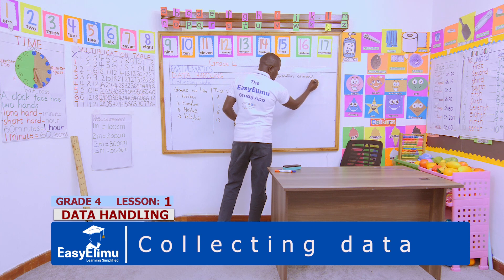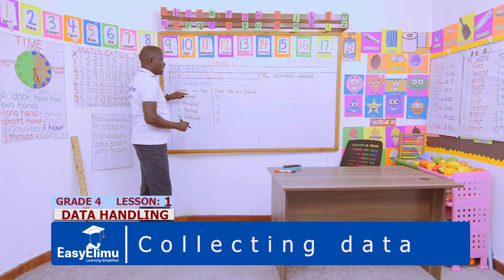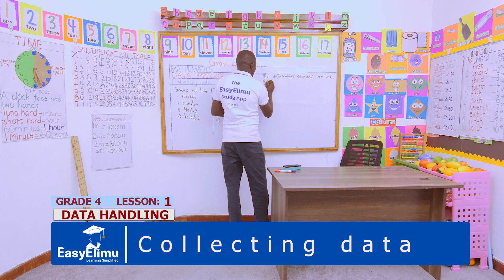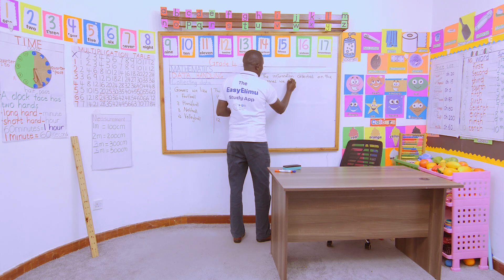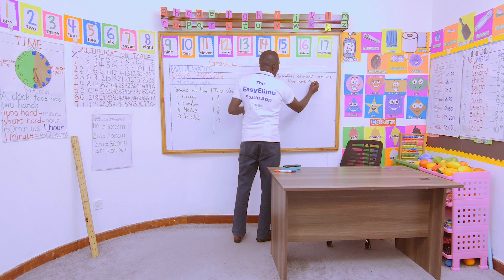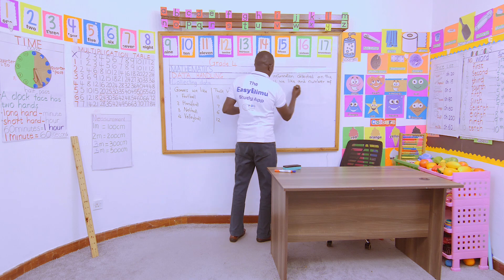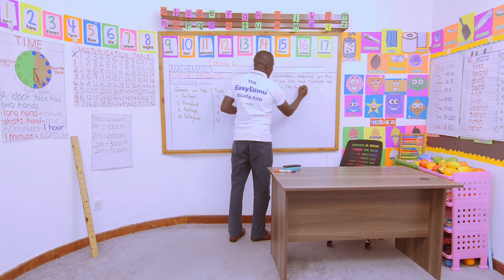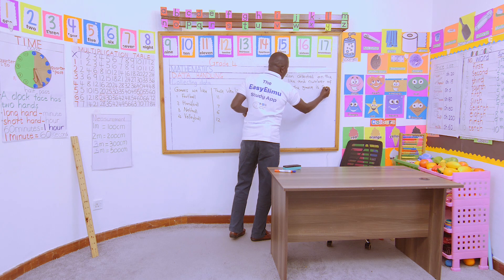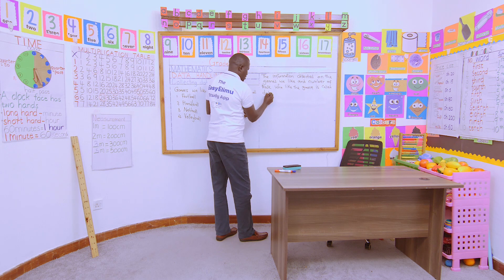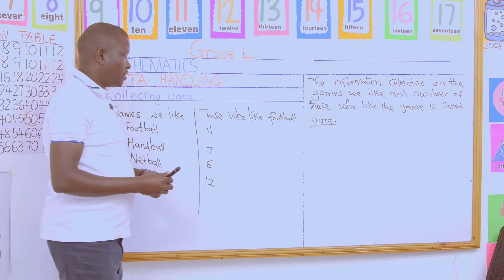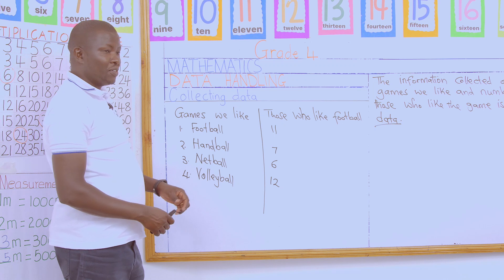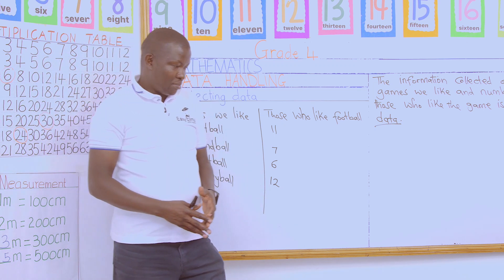The information collected on the games we like and the number of people who like those games — and the number of those who like each game — we call it data. That information is called data — the game we like and the number of those who like that game. Now, let us collect another type of data.